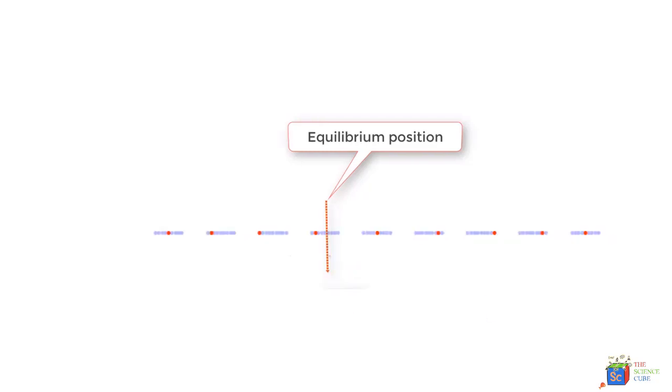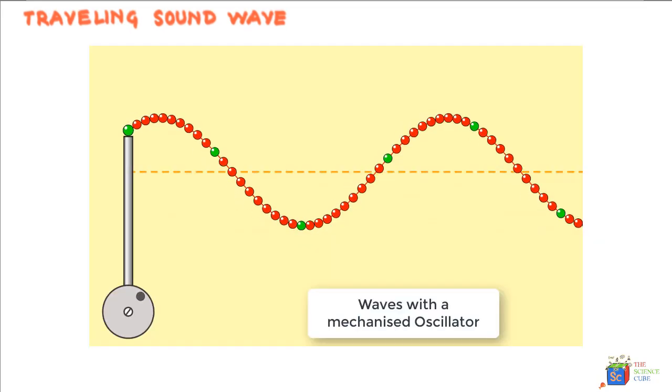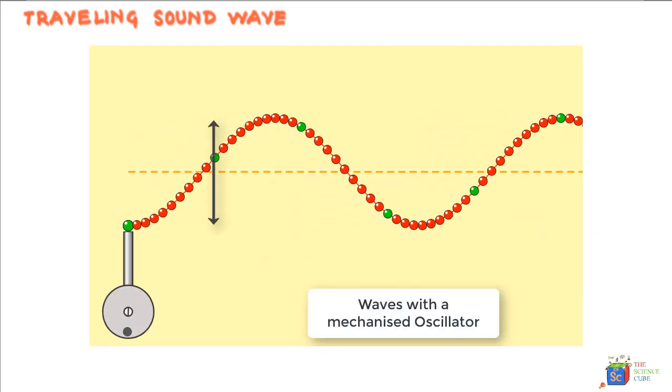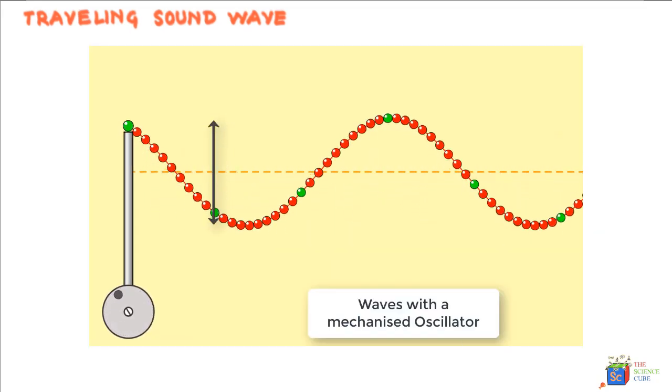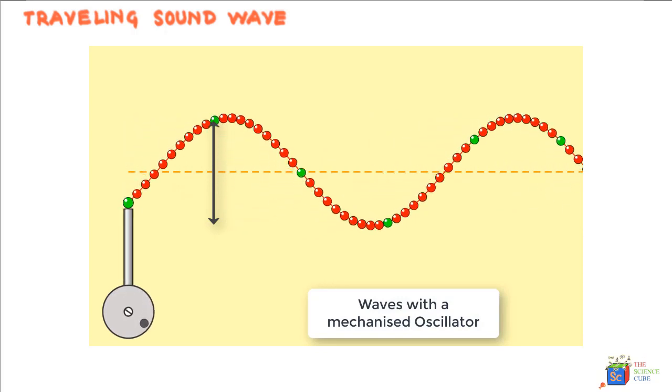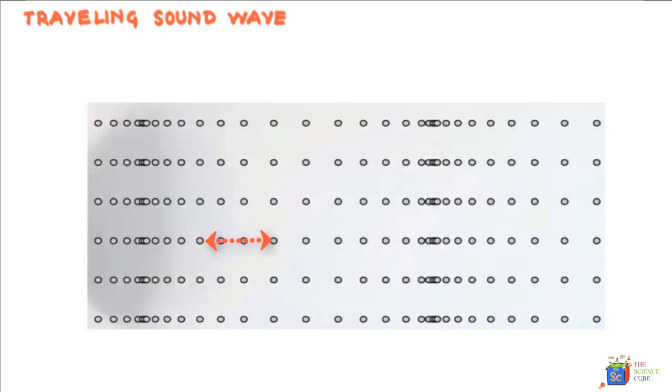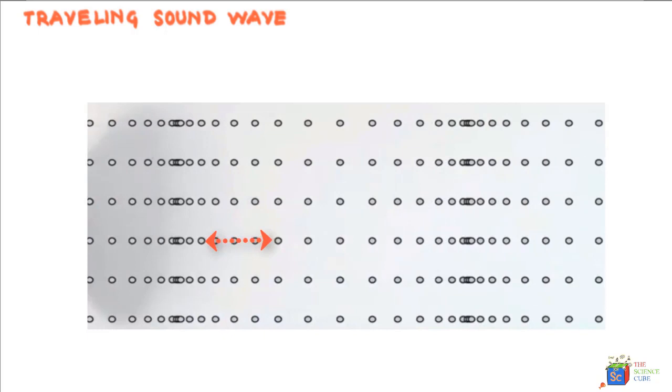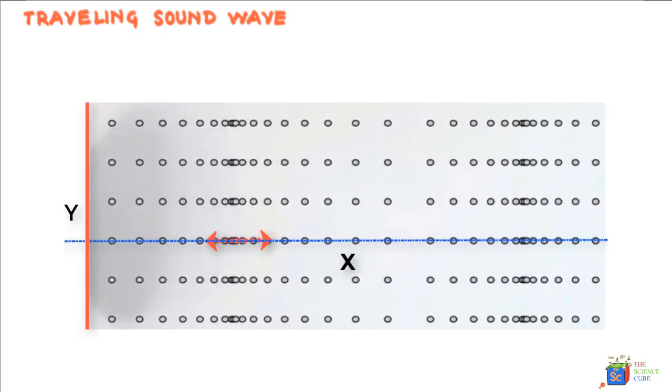Recall how in a transverse wave, a particle moved up and down, but did not move forward along with the wave. The only difference here is that the particle is moving back and forth along the x axis, which is also the direction of the wave.